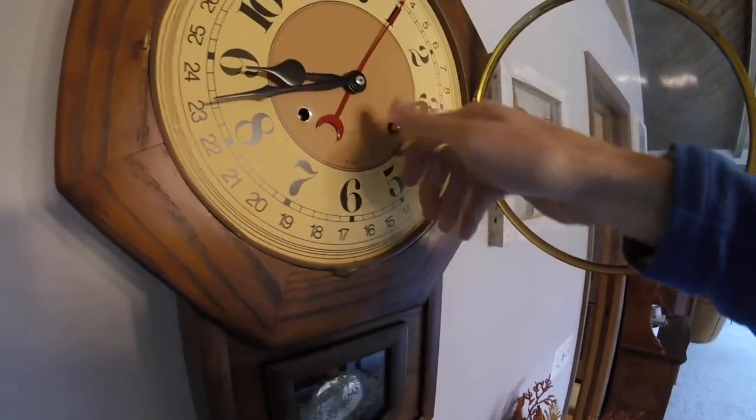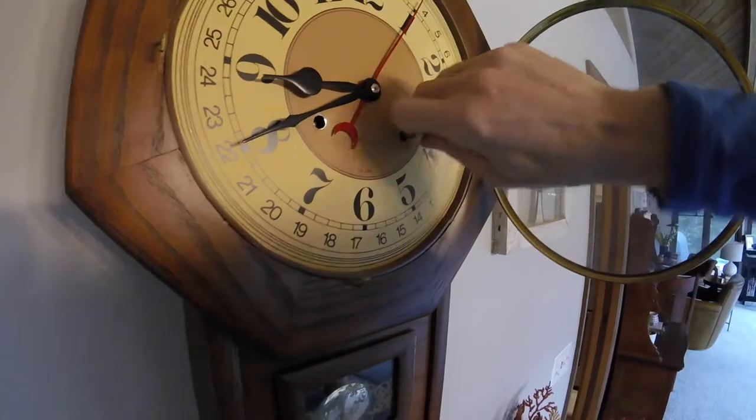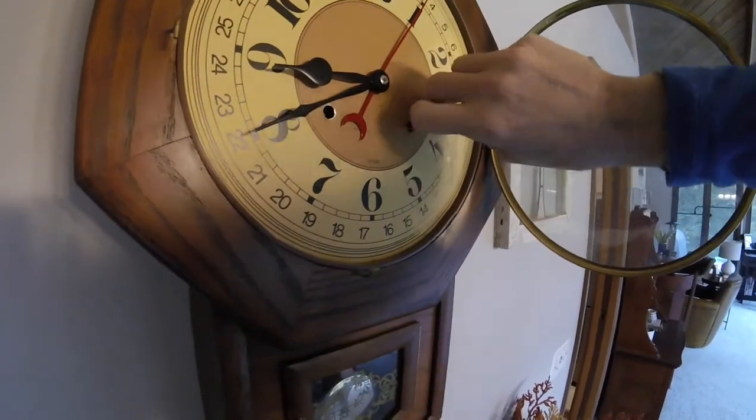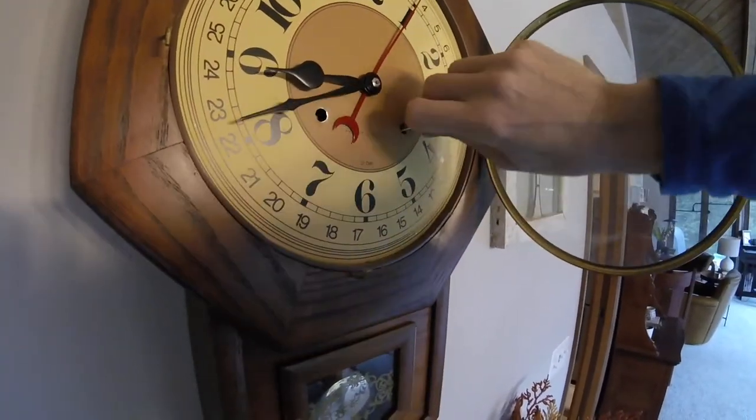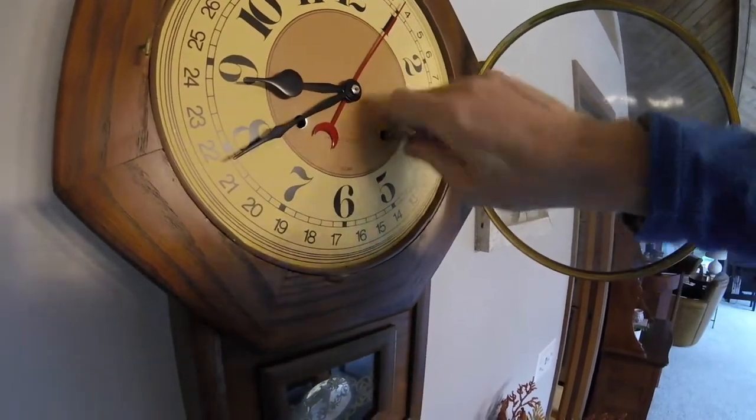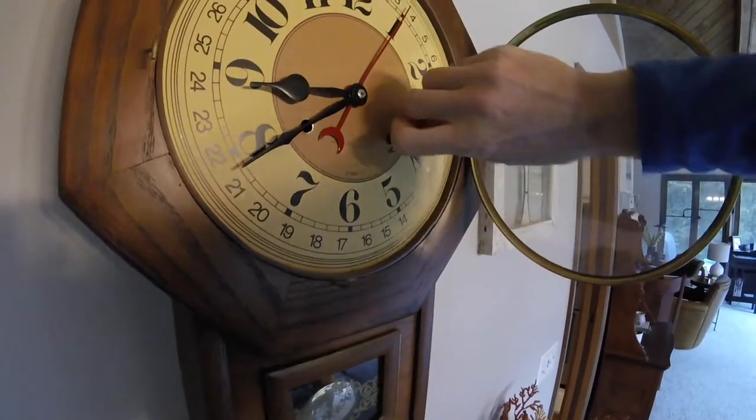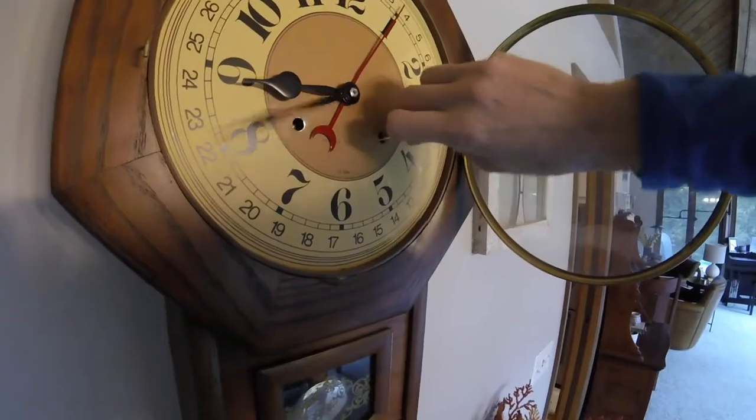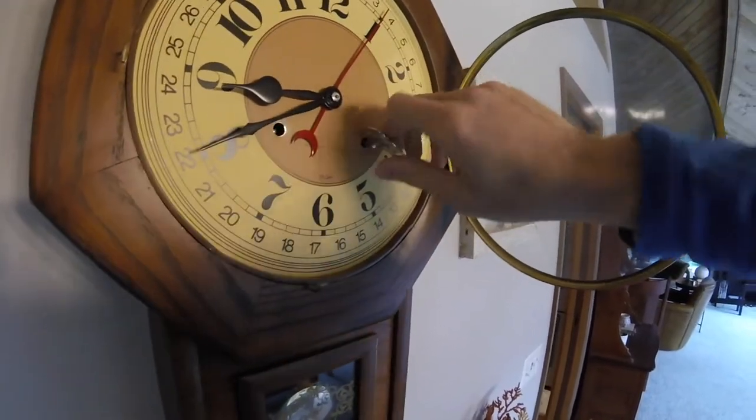Now we'll place the clock key into the right side winding hole. We'll turn the key counter-clockwise until we meet resistance again. We always want to make sure to turn the left side first and then the right side. And we never turn the right side clockwise.